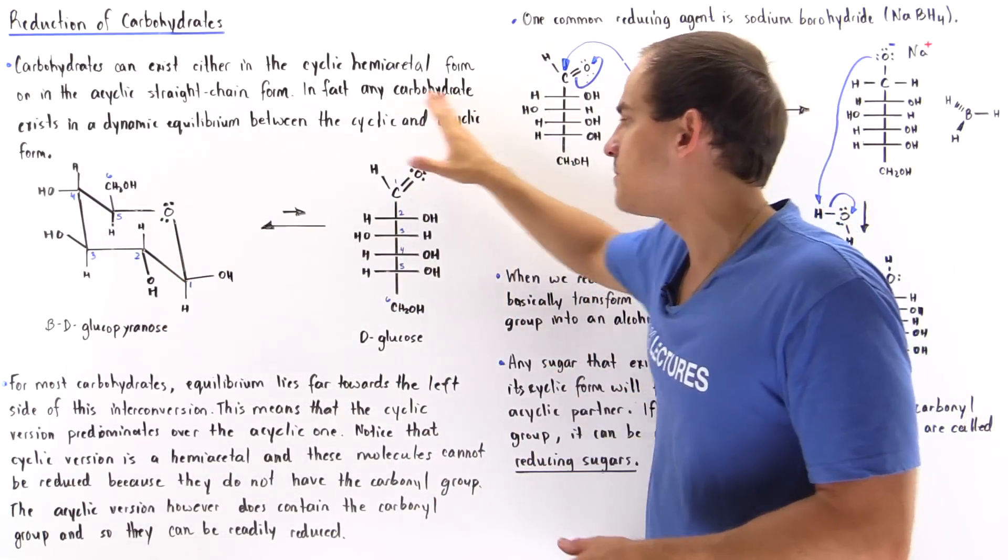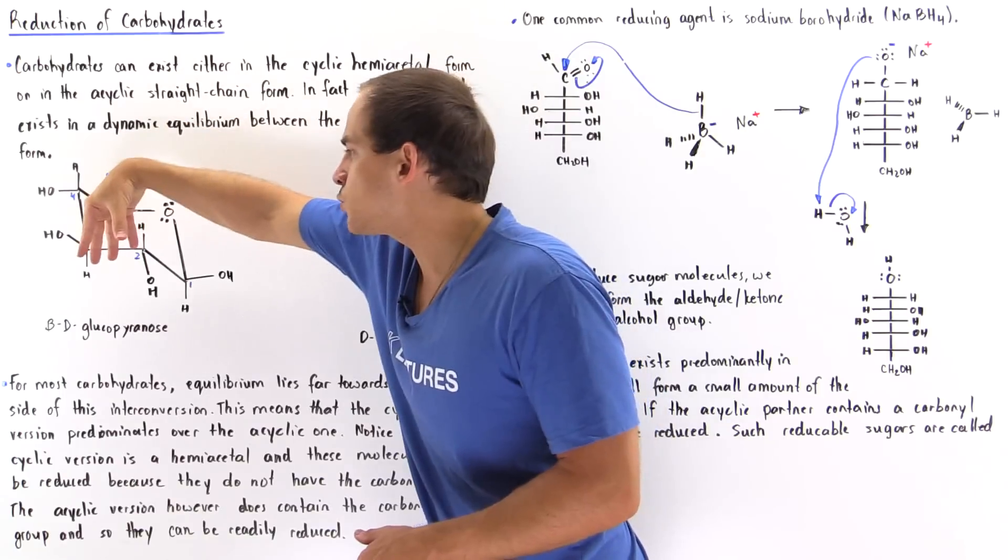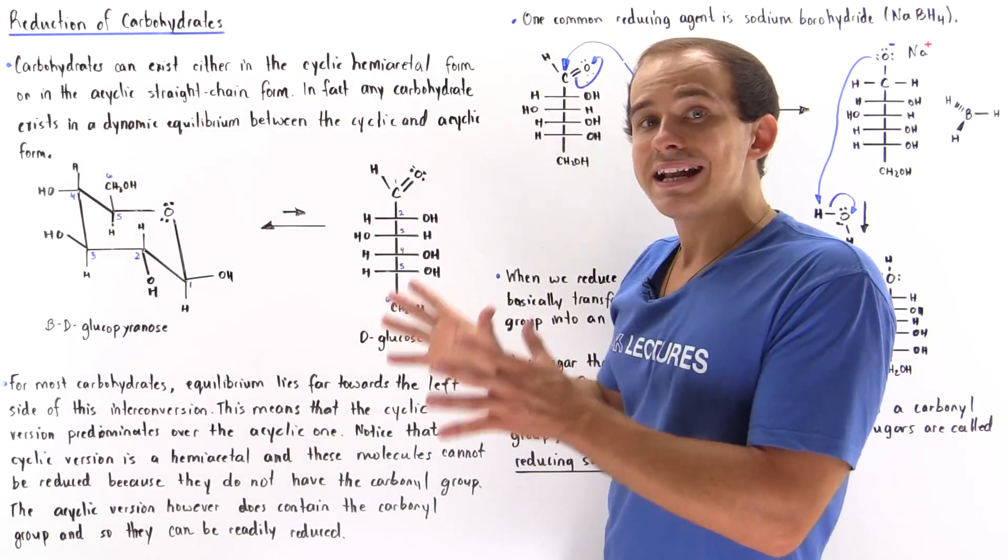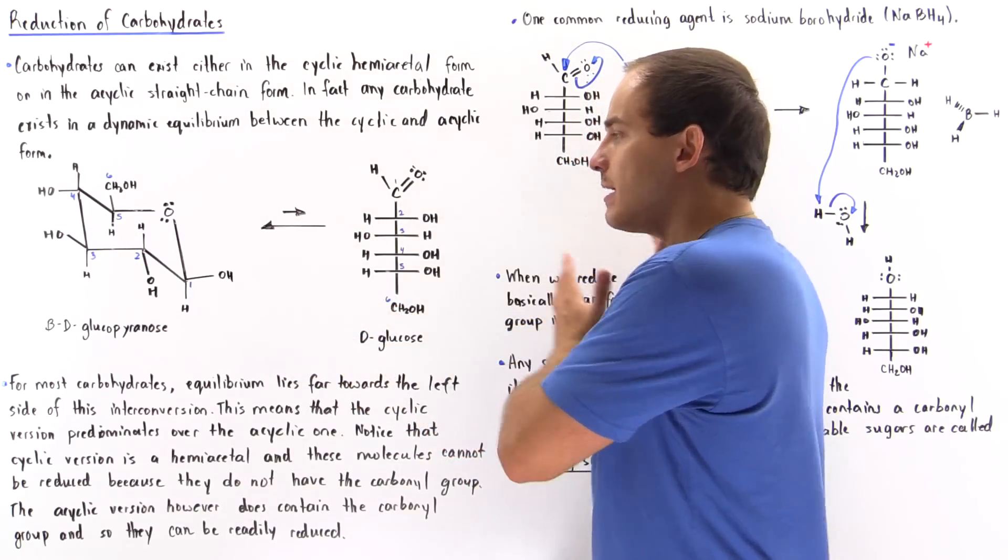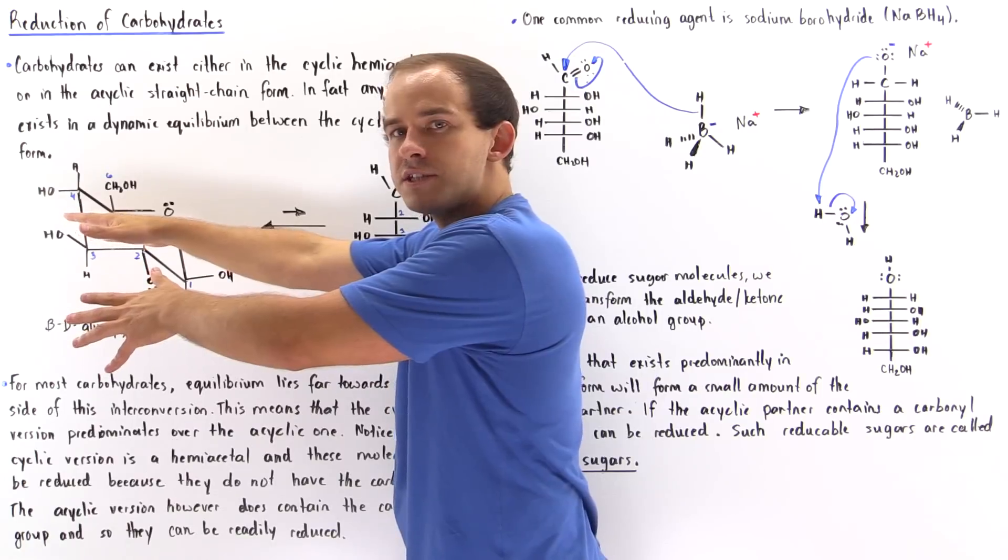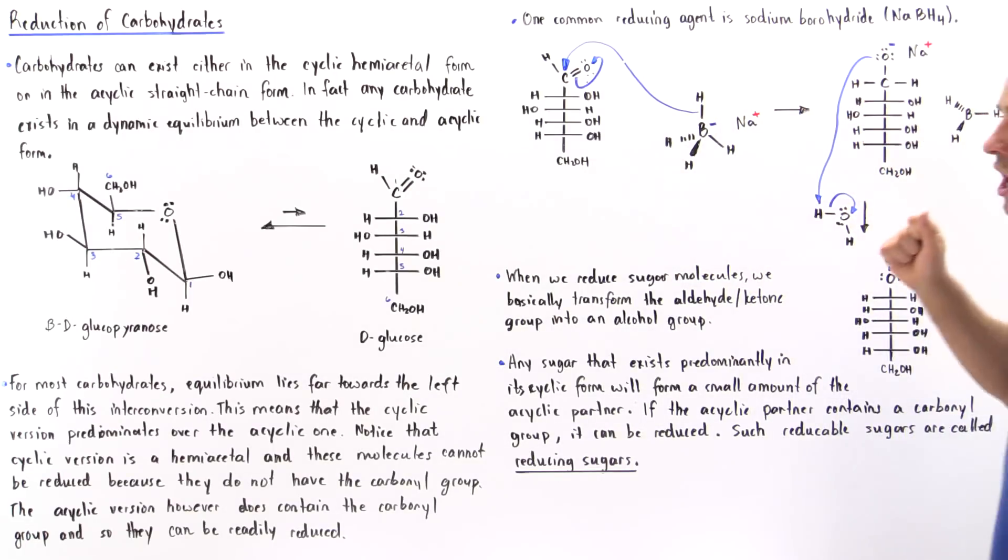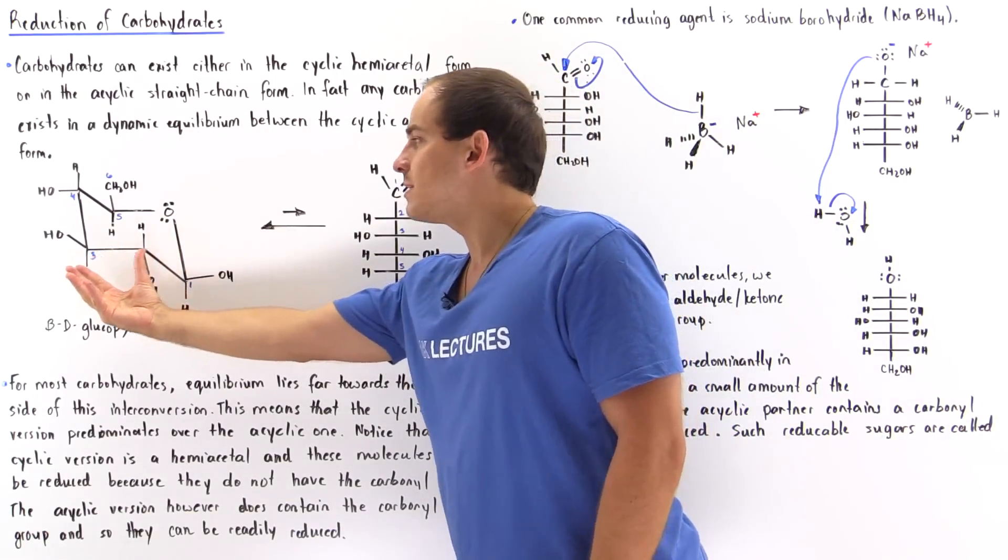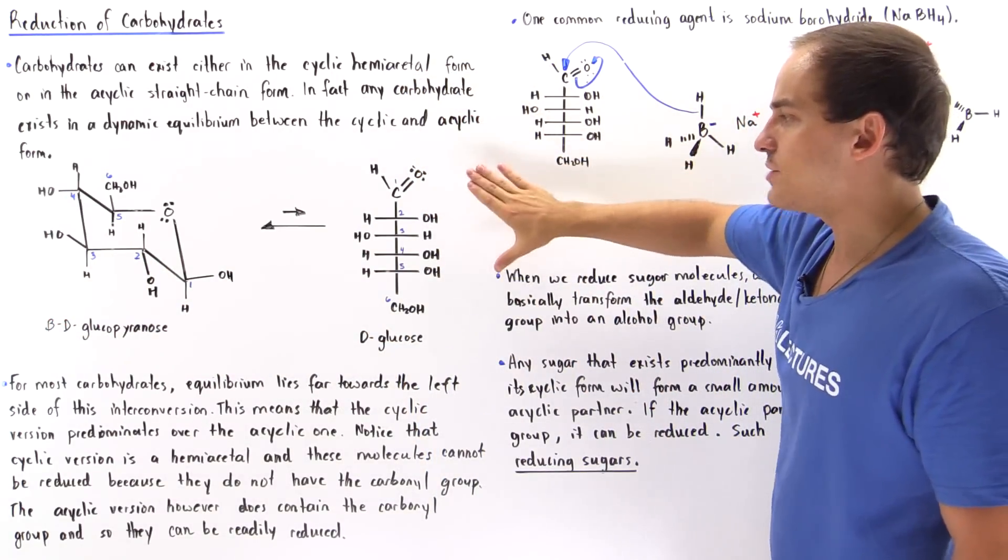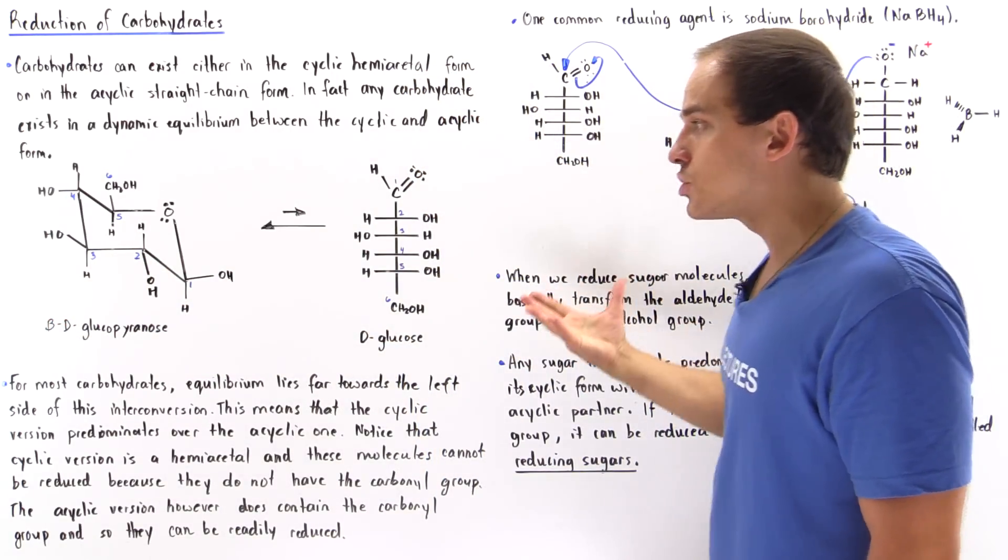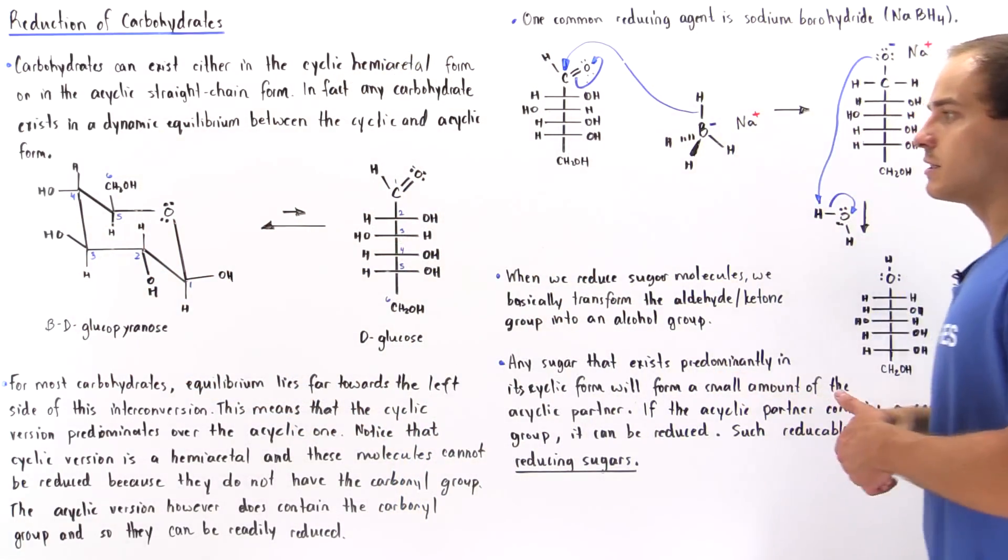So by Le Chatelier's principle, if we decrease the amount of product of this acyclic version, this will be shifted to this side. So at equilibrium, our equilibrium of this interconversion basically lies very far to the left side. But as we deplete this, as we use it up in the presence of sodium borohydride, this will basically shift to the right side and this will interconvert into this open straight chain acyclic version. Eventually, we're going to use up all of this cyclic because it will all convert into our acyclic form.